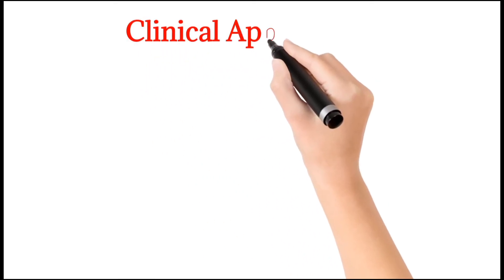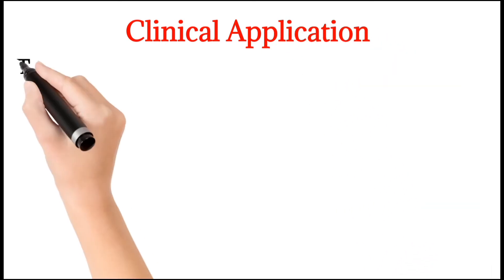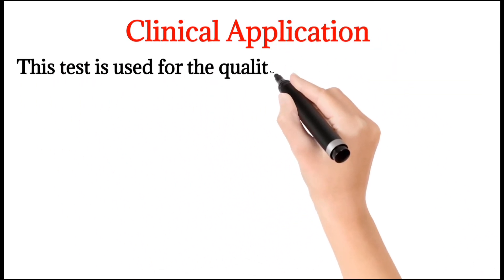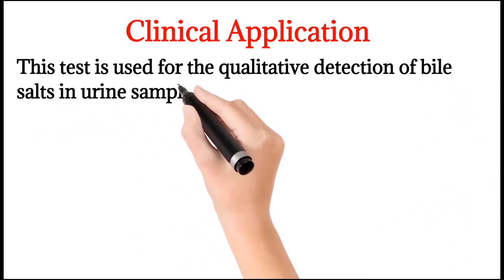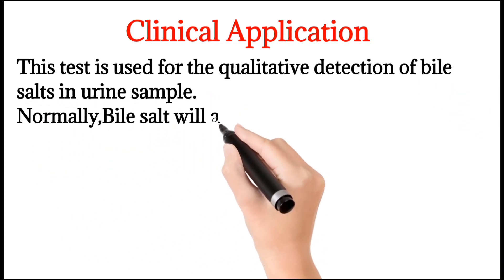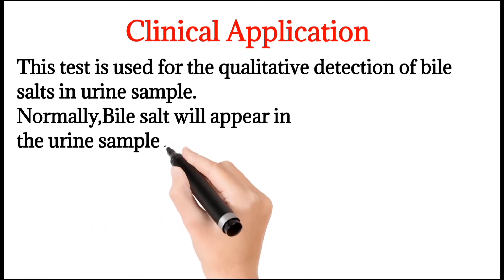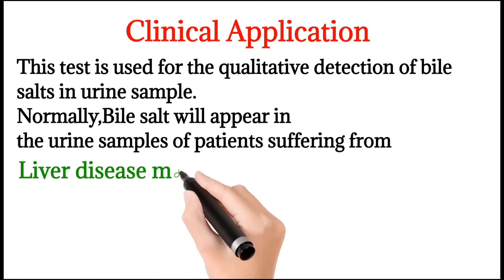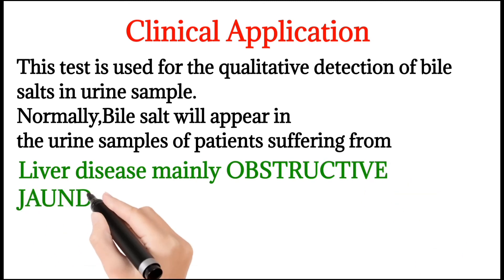Now we will see the clinical application of this test. This test is used for the qualitative detection of bile salts in a urine sample. Normally, bile salts appear in the urine of patients suffering from liver disease, mainly obstructive jaundice.